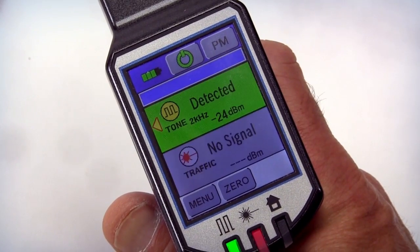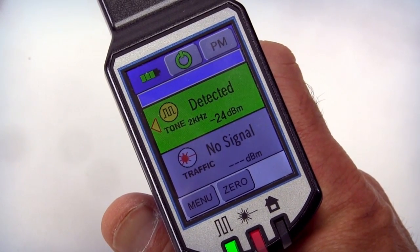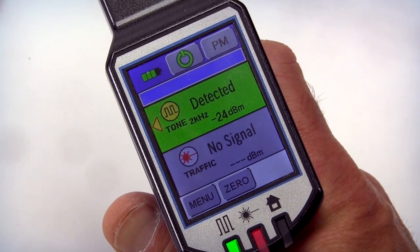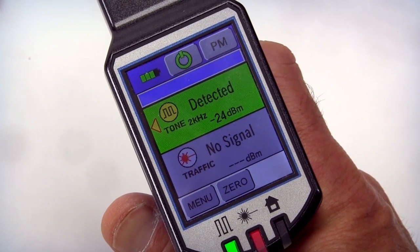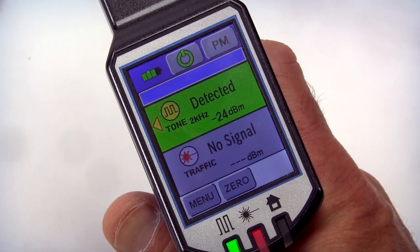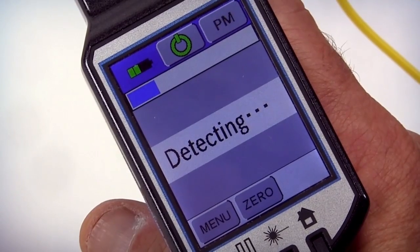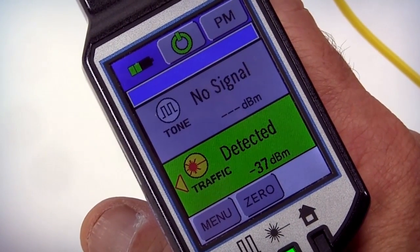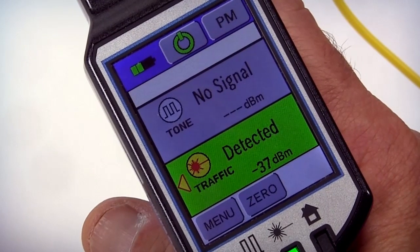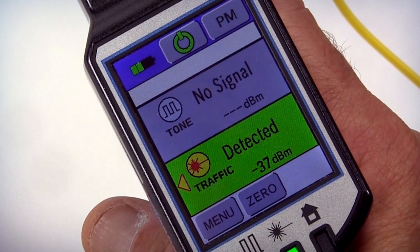If a tone is detected, the top result screen will indicate the direction of the detected signal, the frequency of the detected tone, and the relative power of the signal. If the traffic is detected, the lower result screen will indicate the direction of the detected signal and its relative power.